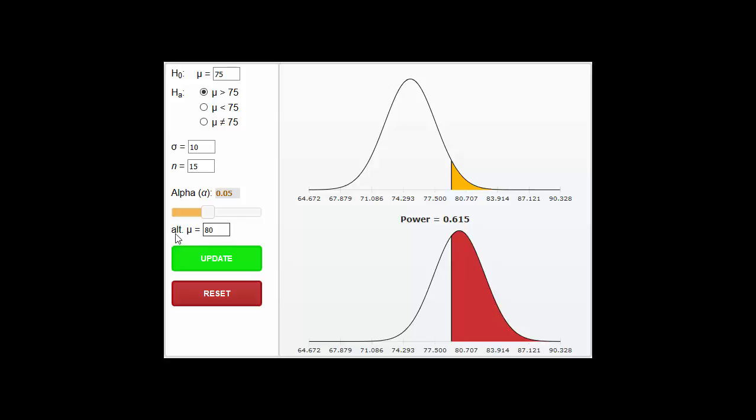It might be better to call that the true or real population mean. It's not just an alternative to H0. It is what really is there, and we're saying that it really is 80.